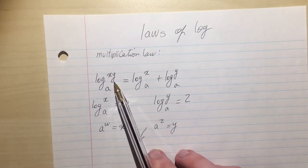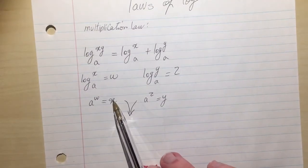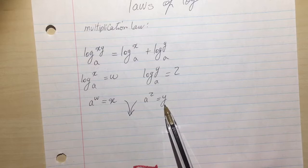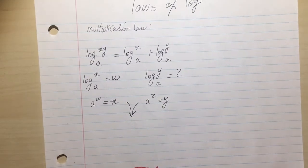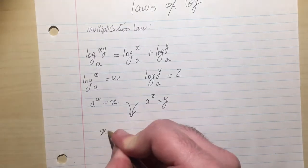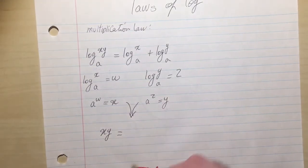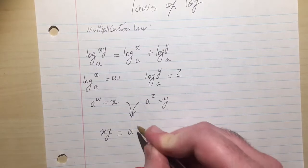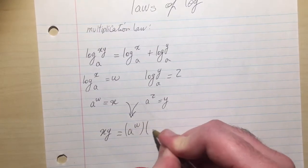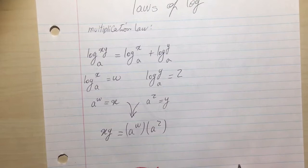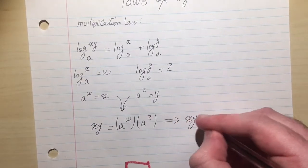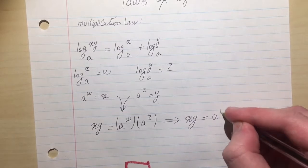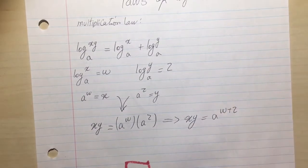What do you see here? x, y. You have x equals to something and y equal to something else. So you want x, y. Just multiply them to get that. So you get x, y equal A to the w times A to the z. Then you can rewrite this as x, y equals to A to the w plus z.